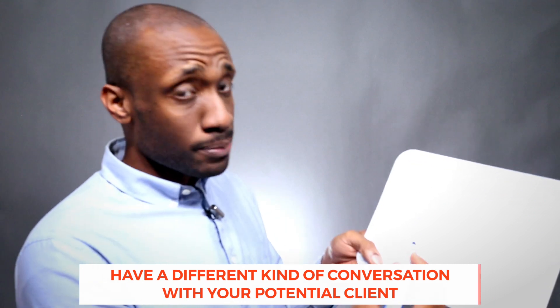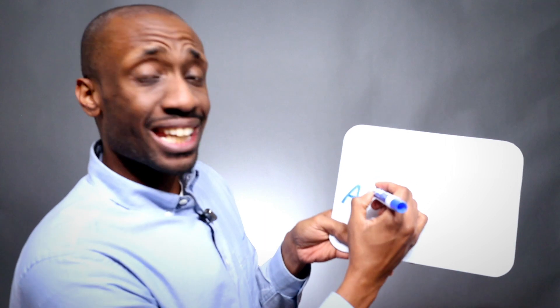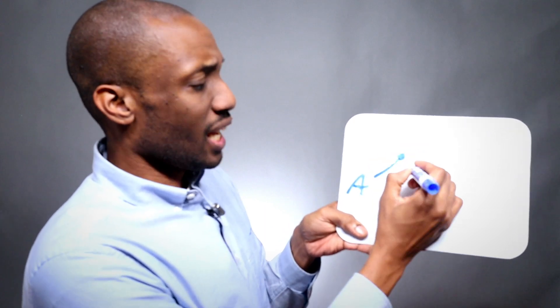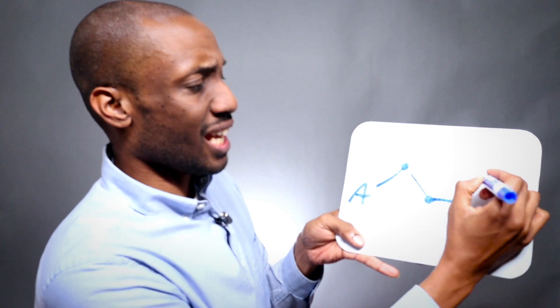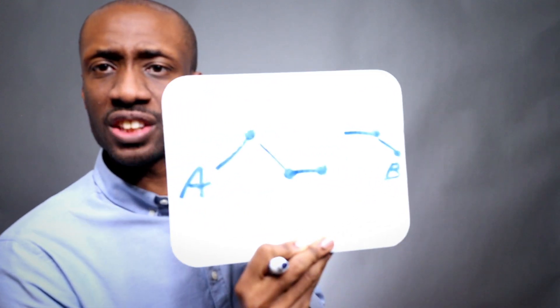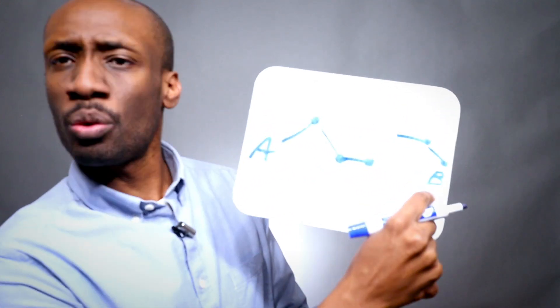So what you've got to do is admit that your client, they are where they are right now. Okay? That's fine. But getting to where they want to go involves steps in a chain. Right? There are a series of things that have to happen to get them where they want to be.